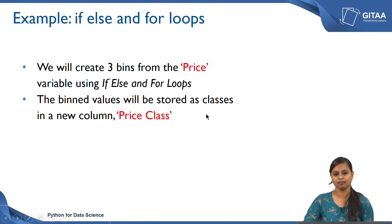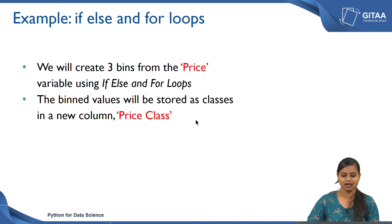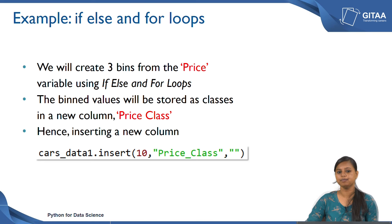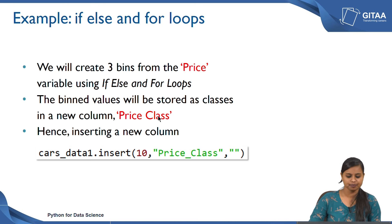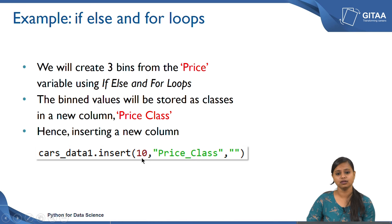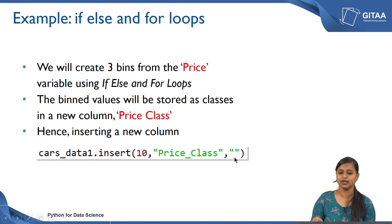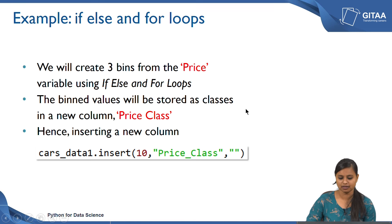The binned values will be stored as classes in a new column called price_class. I need to create a new column in the existing DataFrame, which I have read and kept as cars_data1. Using the dot insert function, I give the position where the column should be added, the column name, and I have given blank so it will create a column with blank values. A new column has been created as price_class so we can store all the bin values as classes.